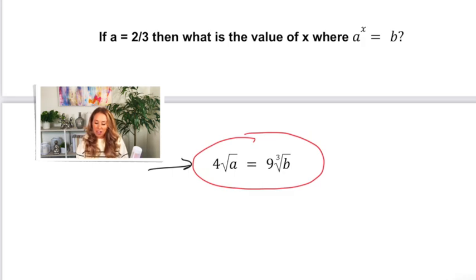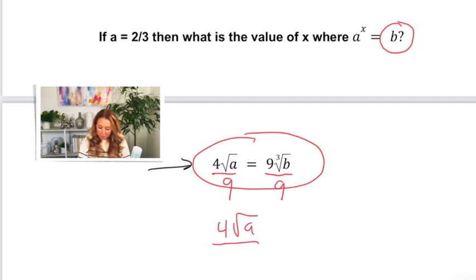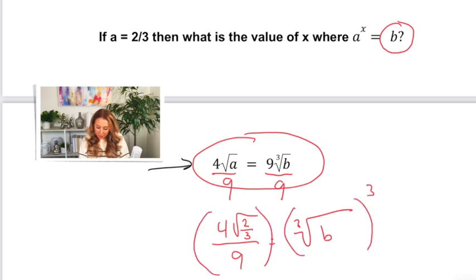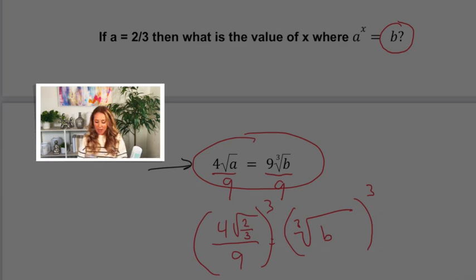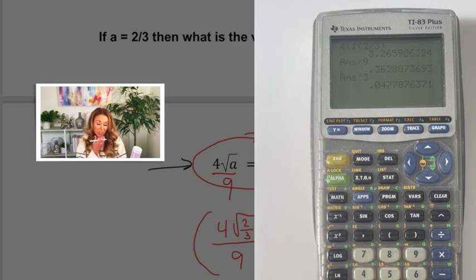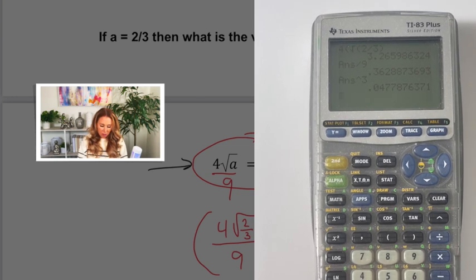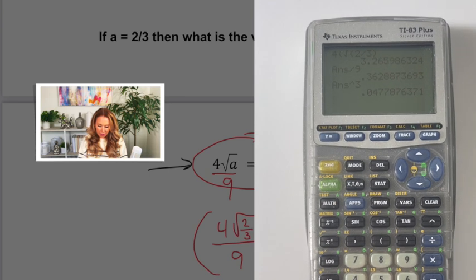So first, because I want to get a to the X equals B, I thought, all right, well, let me get B by itself and find out what B is defined as. And then I can set that equal to a to the X and solve. So I just started to move everything away from B. Oh, and sorry, I actually substituted in two thirds for a too. So let me go ahead and do that because they told us a is two thirds on this problem. And then, to undo the cube root, you have to cube it. So you had to cube both sides. Now at this point, I had to put that into the calculator. So I'm going to go ahead and do that right now. Okay. So I got an irrational decimal, which was 0.0477876, and that equals B.